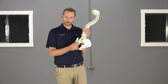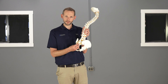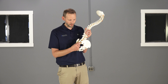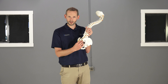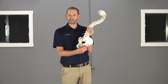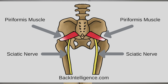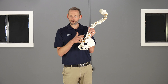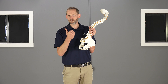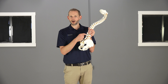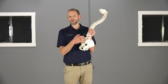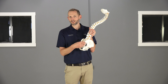You have a piriformis muscle that attaches from your sacrum — the base of your spine — to your hip, right there. It's a thin muscle, but it runs right there, and your sciatic nerve actually runs underneath it. If your piriformis muscle is dysfunctional, too tight, or in spasm, it can compress against that sciatic nerve and give you symptoms down the leg. The real difference is where the problem is — either in the low back or in the piriformis muscle in the butt.